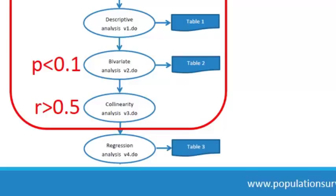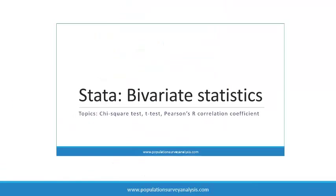Second, we test the correlations among all covariates with the Pearson's R statistic to identify colinear pairs associated at R greater than 0.5, and retain only one of the variables — usually the one most strongly associated with the outcome — to ensure a stable model. Watch the bivariate statistics video at www.populationsurveyanalysis.com if you have questions about that.